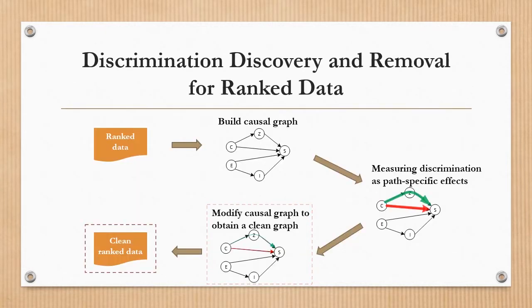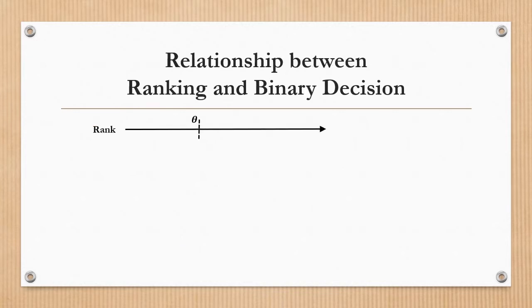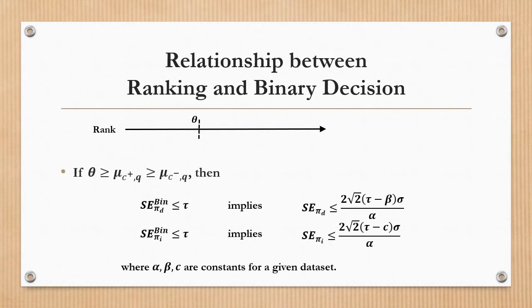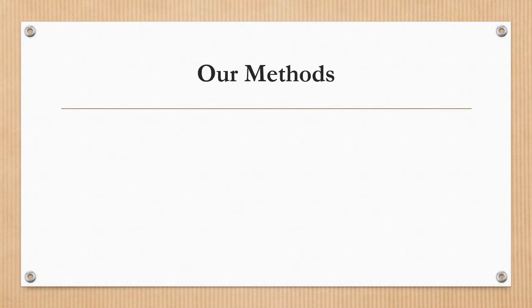The last step is to reconstruct fair ranked data from the non-discrimination causal graph. Finally, by assuming that a binary decision is obtained based on a certain cutoff point imposed on the ranking, we derive a relationship between the discrimination in the ranking and that in the binary decisions.